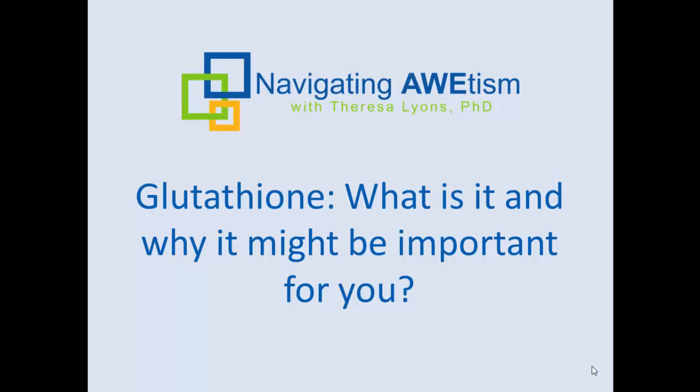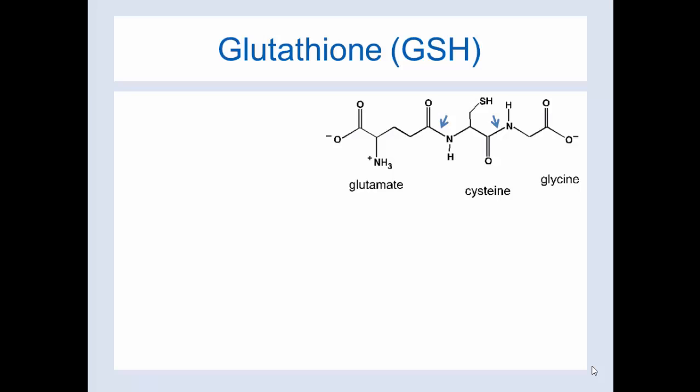Glutathione — what is it and why might it be important for you? Here's the chemical structure of glutathione. It is a tripeptide, which means there are three peptides contained in the molecule of glutathione. You can see this bond here that the blue arrow is pointing to — that's what we call a peptide bond.